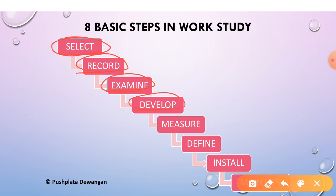The fourth step is develop — develop the most economic method taking into account all the circumstances of the organization. The fifth step is measure — measure the quantity of work involved in the method selected and calculate the standard time for doing it. The sixth step is define — define the new method and the related time so that it can always be identified.